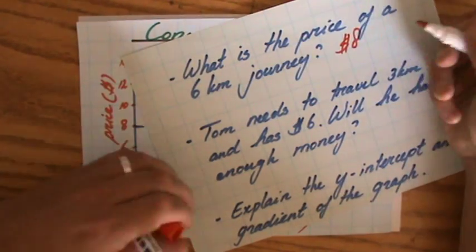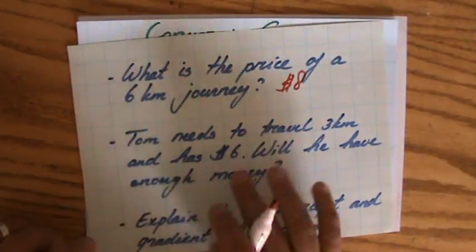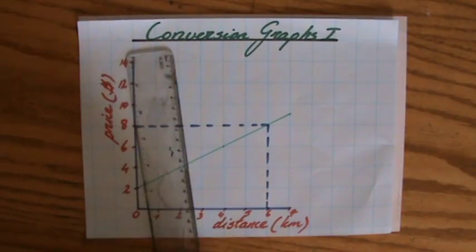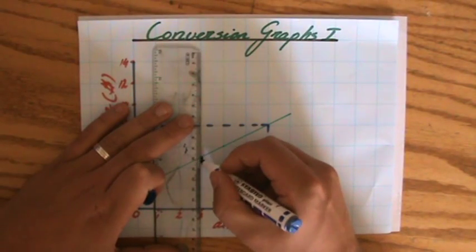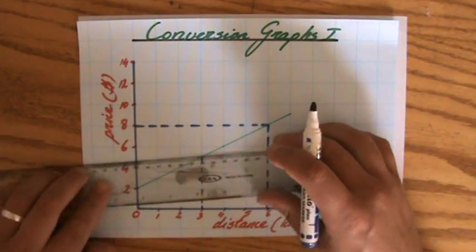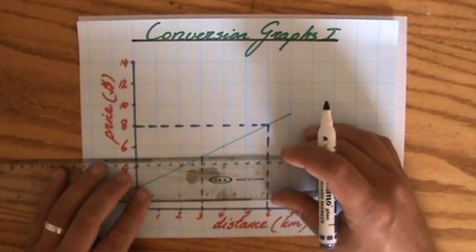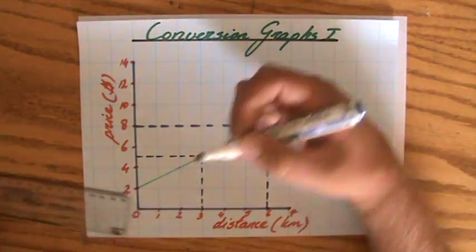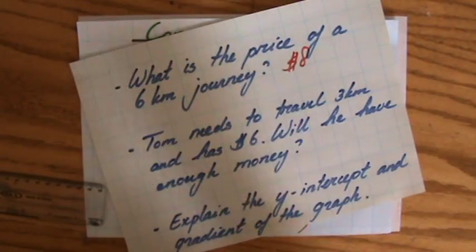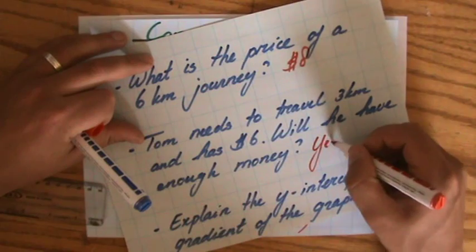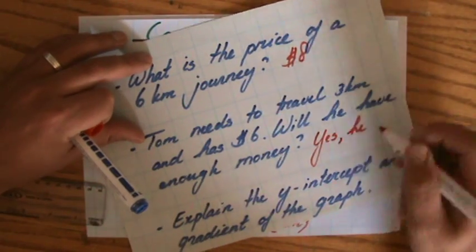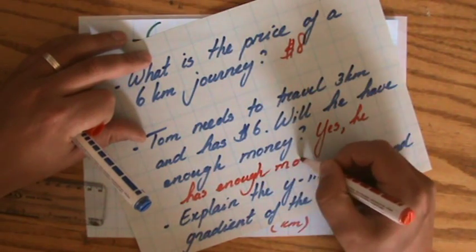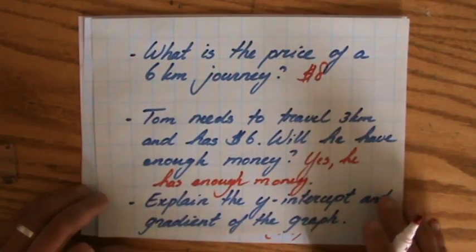If we continue, it says, well, Tom needs to travel three kilometers and has $6. Does he have enough? Well, let's find out three kilometers. Where is that? Three kilometers over here. And as you can see, if he has $6 in his pocket, will he have enough? Well, the price is going to be less than six. It is going to be five actually. So yes, he will have enough money. Perhaps they can ask you how much change will he receive or whatever. But in this case, it will be just, yes, he has enough money. He can even buy an ice cream after paying the taxi.